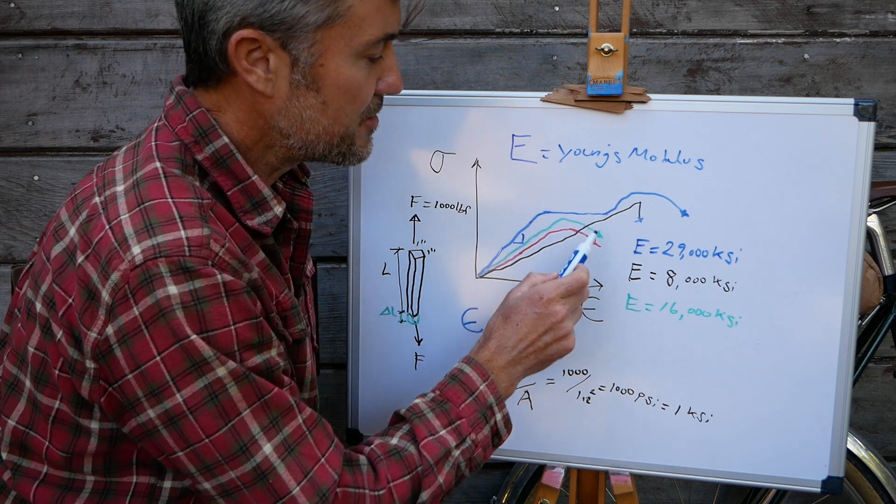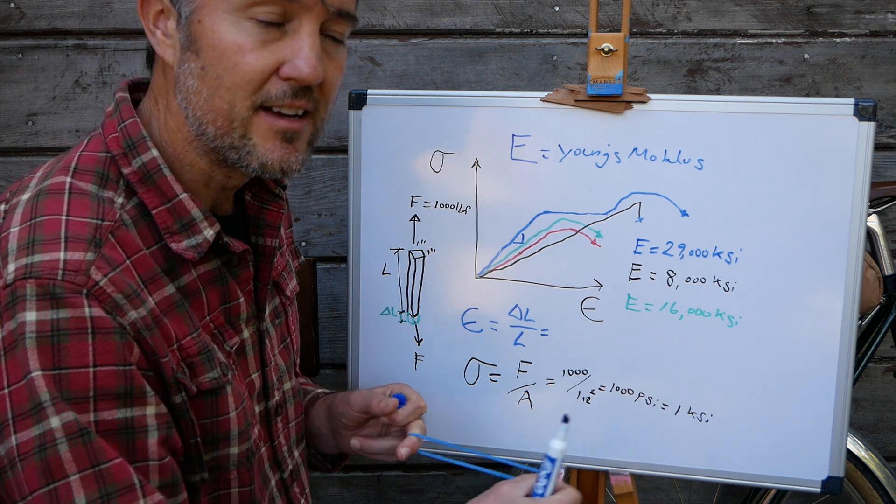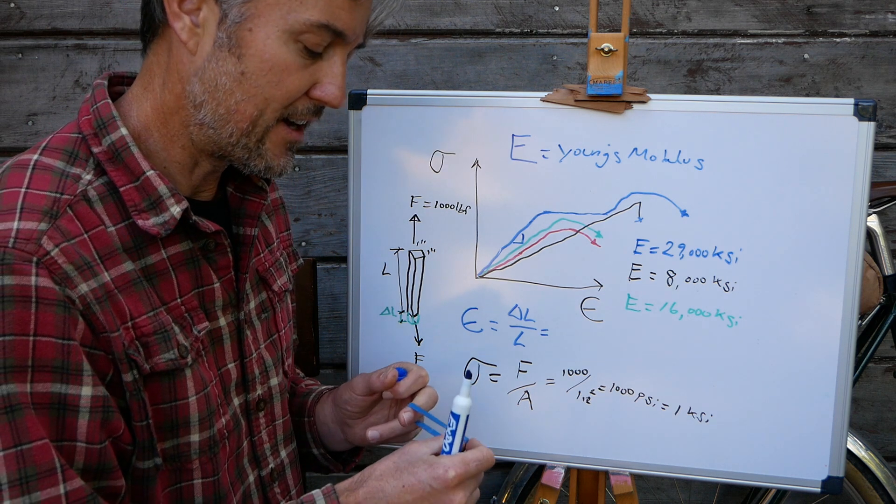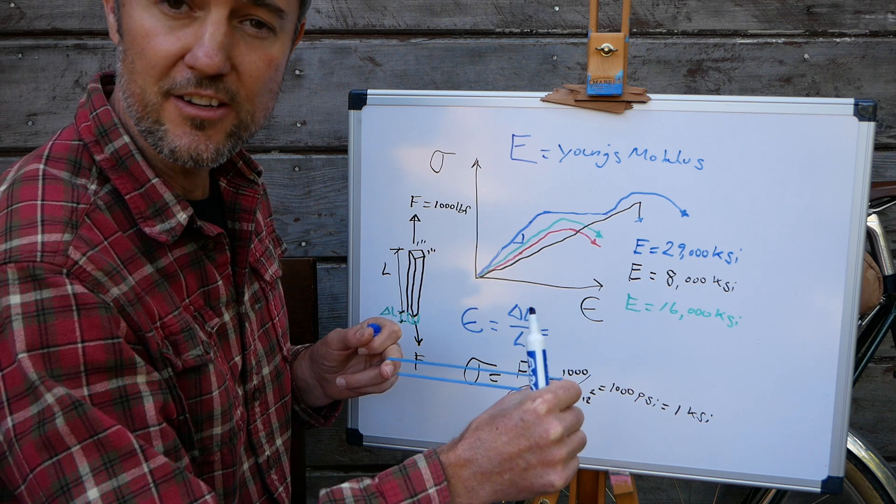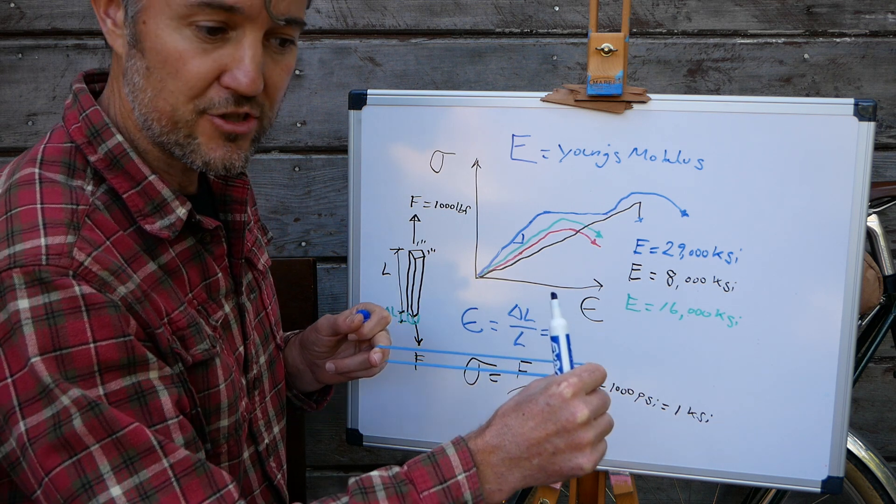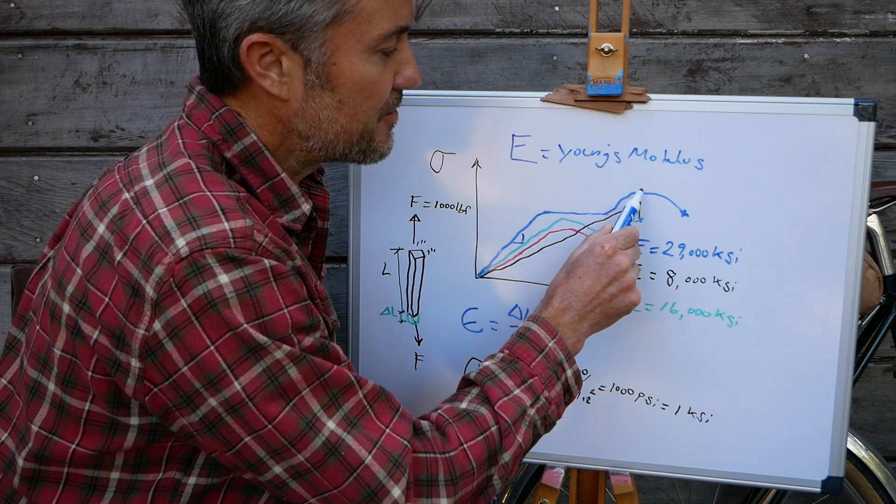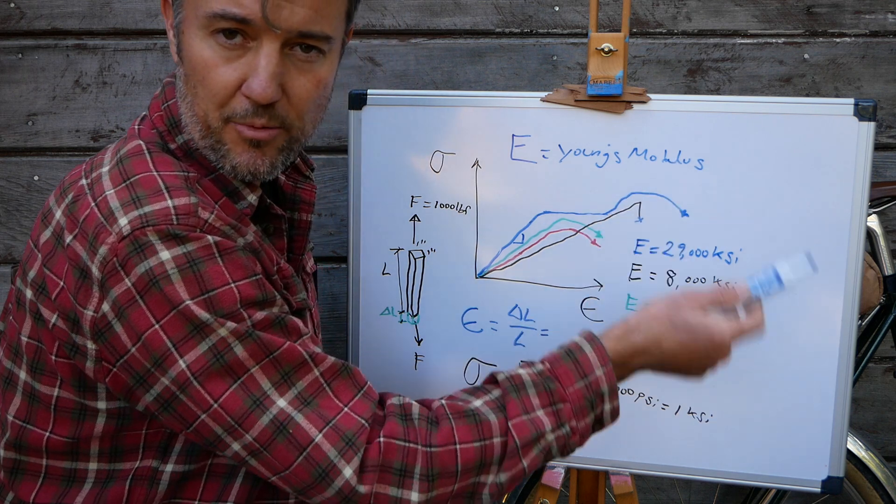So it yields which means it deforms a lot without any additional load. So it's linear elastic, it starts to yield and no additional load, it just stretches a lot and then it starts to get stronger again and it said to start to strain harden and then eventually it ruptures and it breaks.